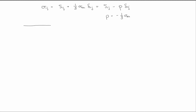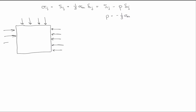Let's consider a solid block that's under hydrostatic stress. We know that the stress state in the rock, as drawn here, would be equal to this term — because it's hydrostatic — so we'll just label it p. As I've drawn it, this is positive compression.